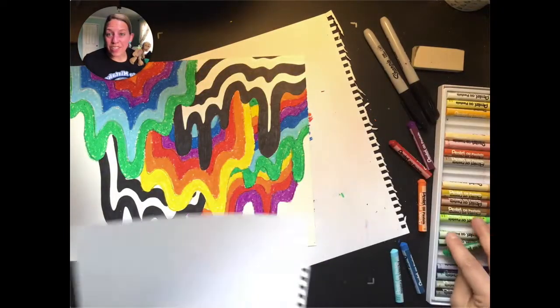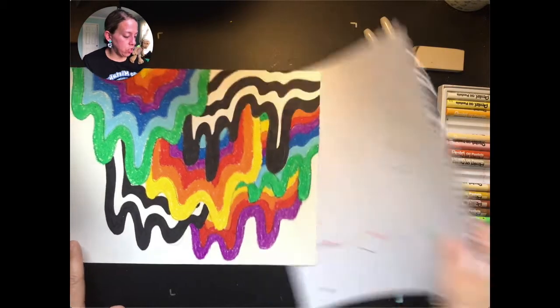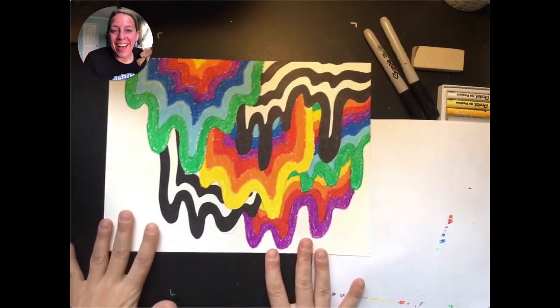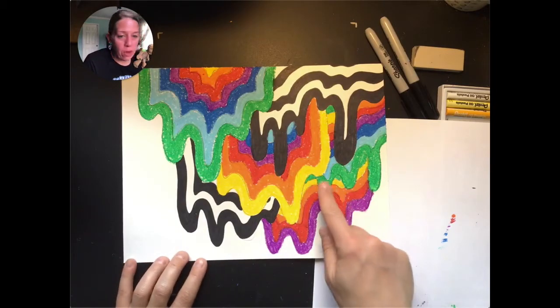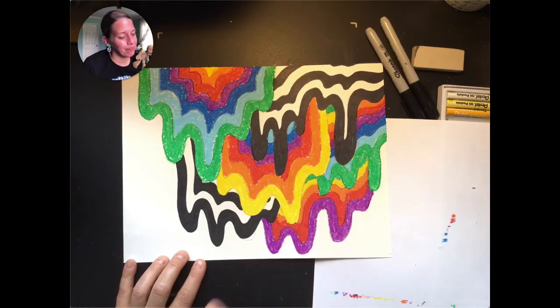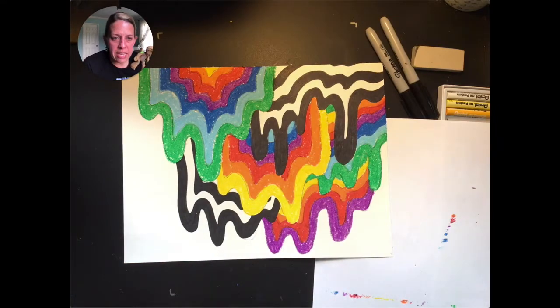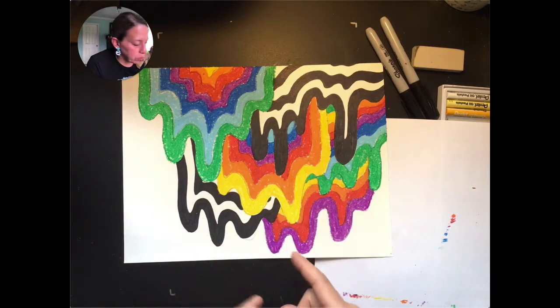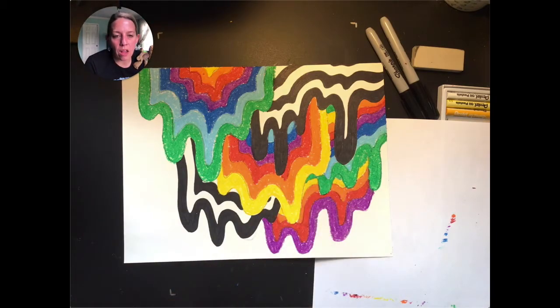All right, guys. So I have finished my coloring. I'm pretty happy with how it turned out. I only had one spot where my color hit my other color. So my green hit my green up here. So if I would have started with red instead or started with blue instead, I wouldn't have had that color on color happen.